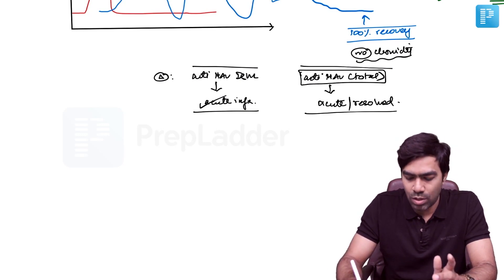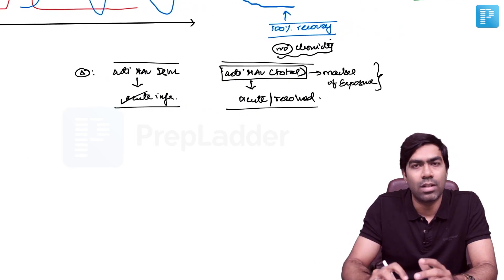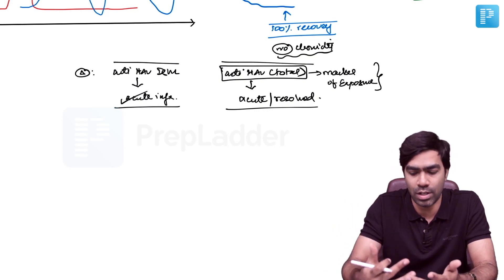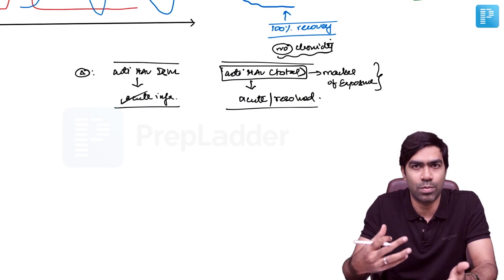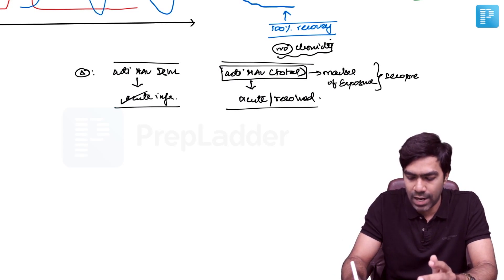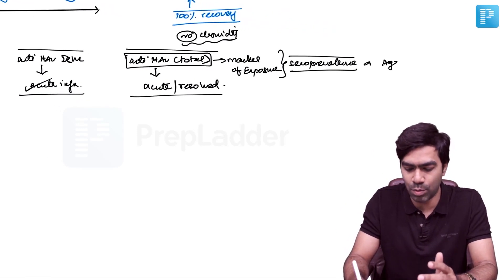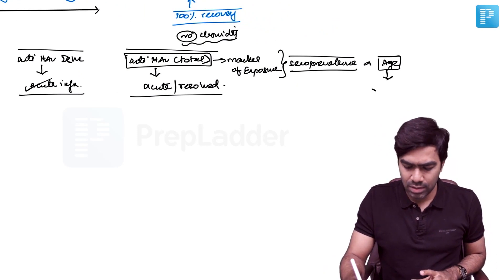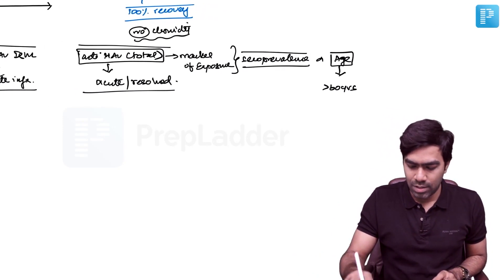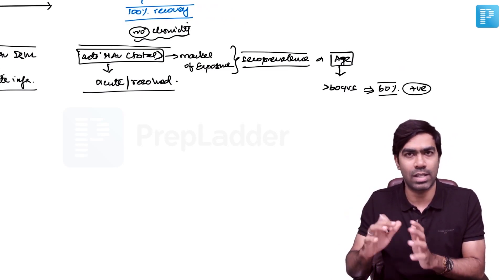Anti-HAV total is a marker of exposure. You use it in patients who are supposed to have had HAV infection in the past or when studying seroprevalence in the community. Most important role of anti-HAV total is understanding seroprevalence in the community - how many people have had infection in the past. The seroprevalence of Hepatitis A virus is directly proportional to age. People aged more than 60 years, 60 percent will test positive for anti-HAV total, meaning they've had HAV exposure in the past.